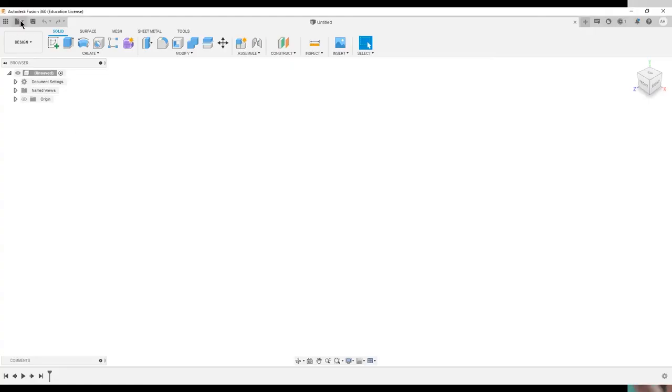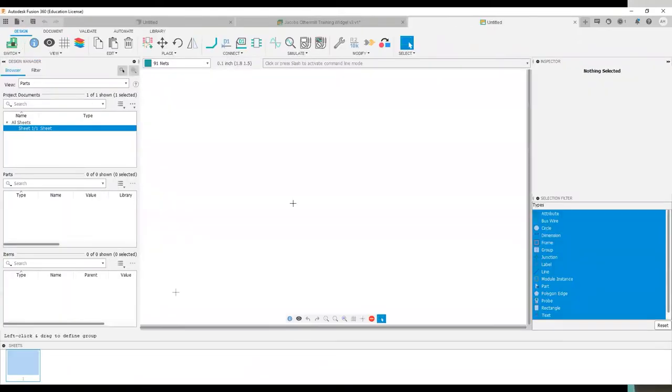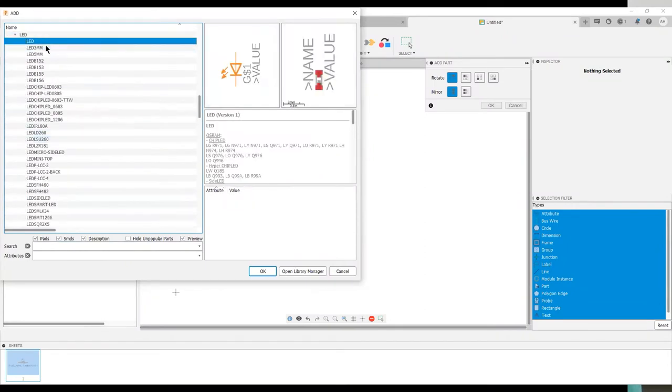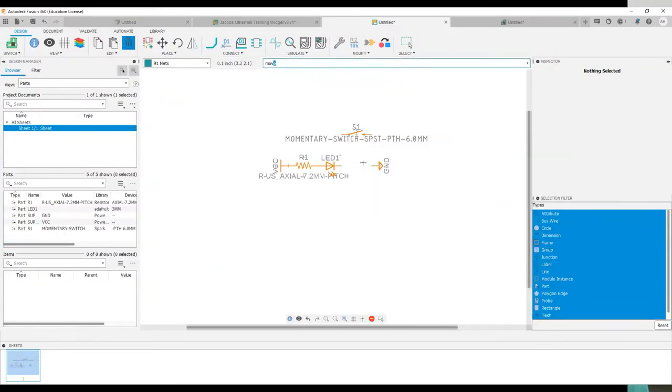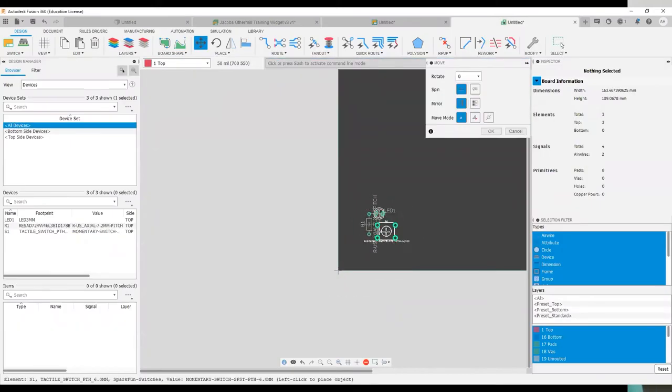We can jump into Fusion, create an electronics design, populate our schematic with a battery, resistor, 3mm LED, and a small momentary switch. After that's wired using the net command, we can jump over into the board layout and position all of our components closely in relation to each other.